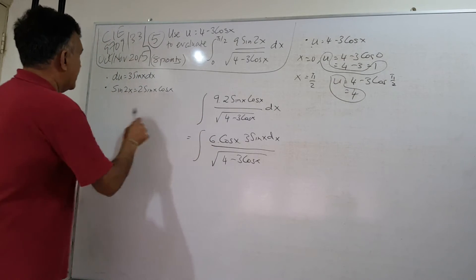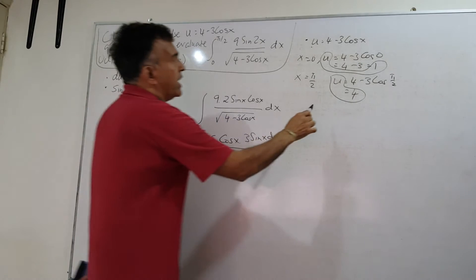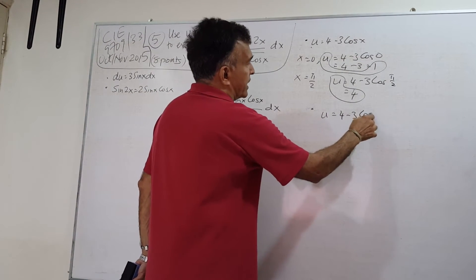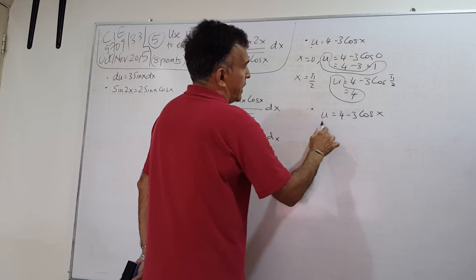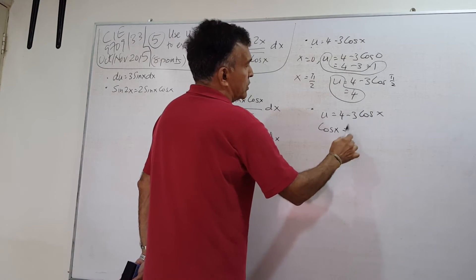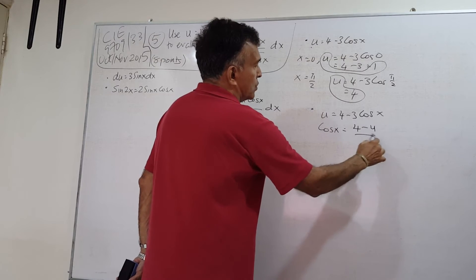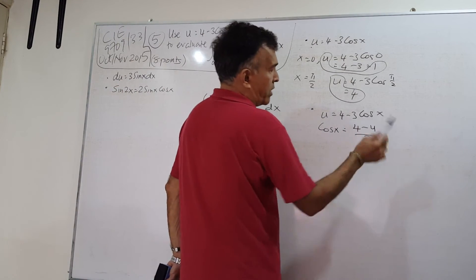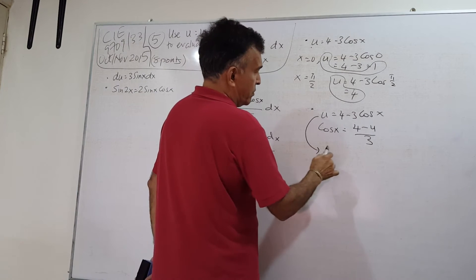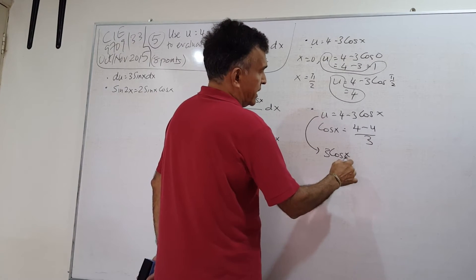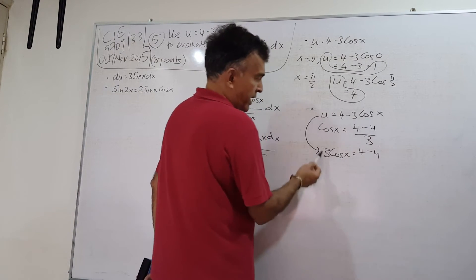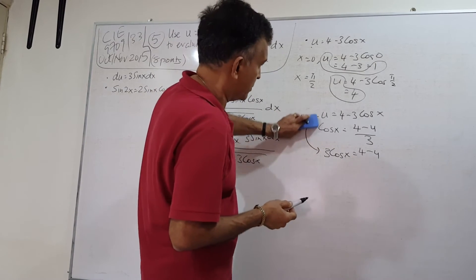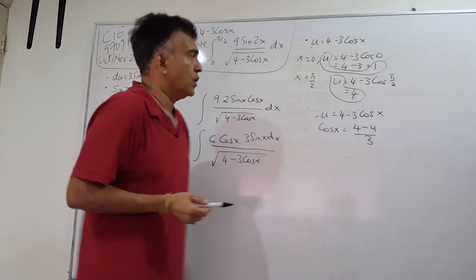One more thing. If u is 4 minus 3 cos x, then cos x will be equals to 4 minus u over 3. We can write it as 3 cos x equals 4 minus u, and then bring the 3 down. So now you know what is cos x as well.